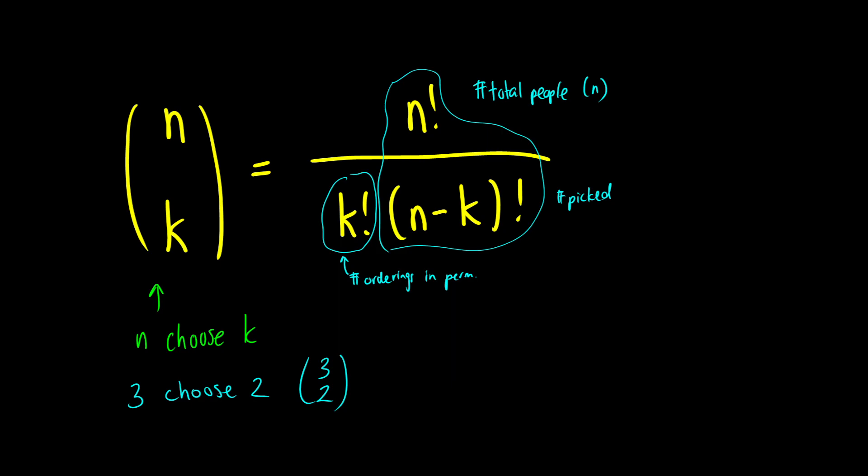And this is going to allow us to get rid of the ordering. So you'll notice this formula from the previous video, the n factorial over n minus k factorial, being choosing k from a list of n. And then the k factorial is getting rid of those different orderings that mean the same thing.